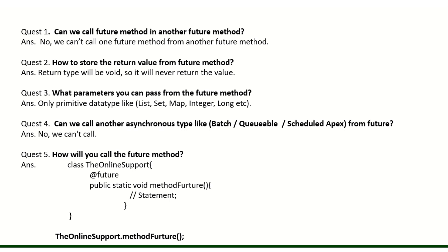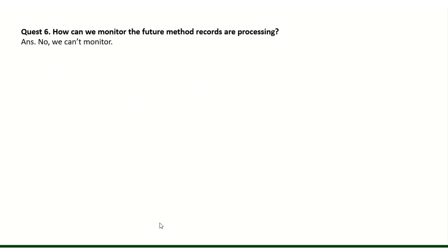What parameters can you pass in a future method? You can only pass primitive data types — examples include lists, sets, and maps of primitives. Can we call other asynchronous operations like batch, queueable, or scheduled Apex from a future method? No, you can never call a batch class, queueable class, or scheduled class from a future method. To call a future method, since it is static, you use ClassName.methodName() — that's it.